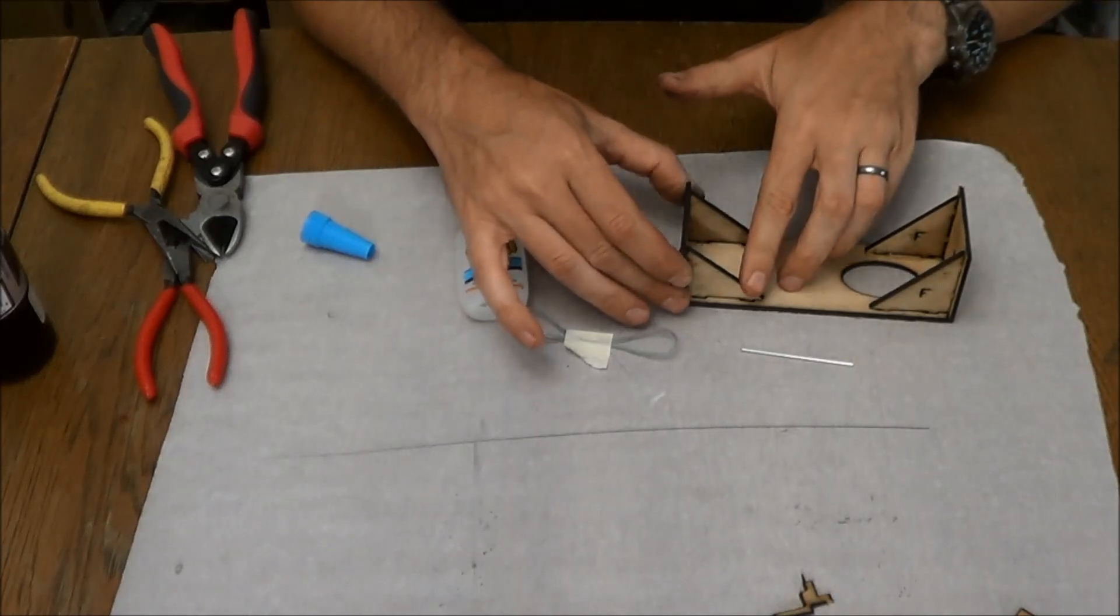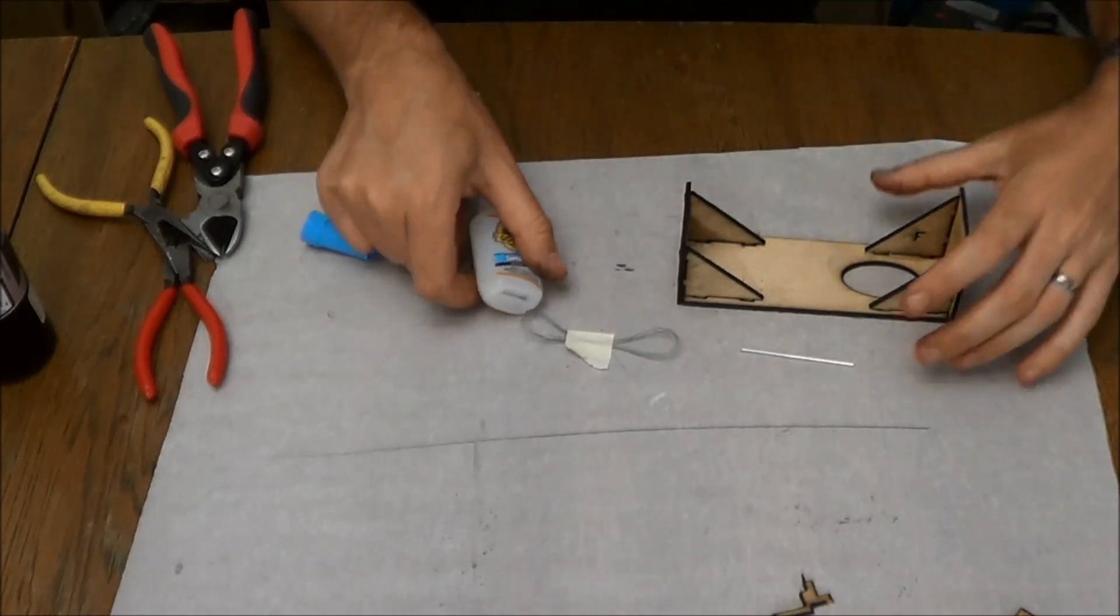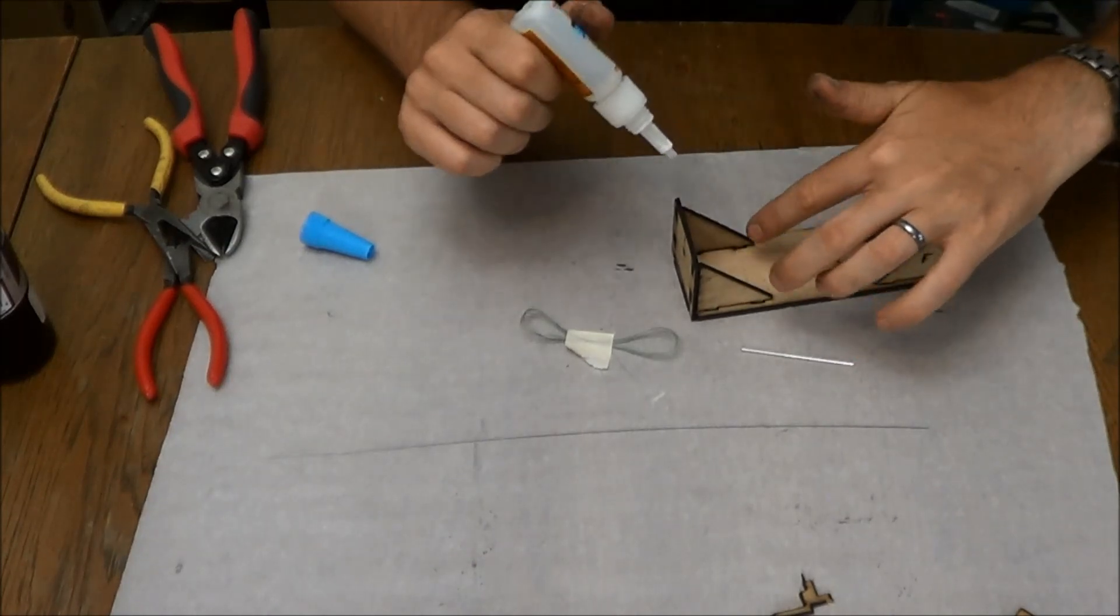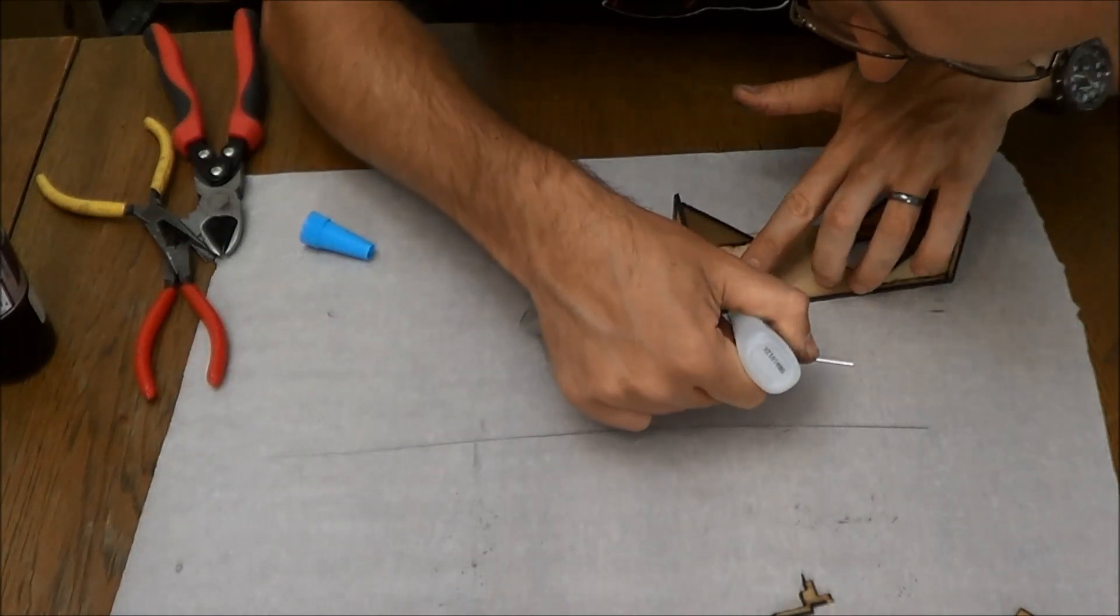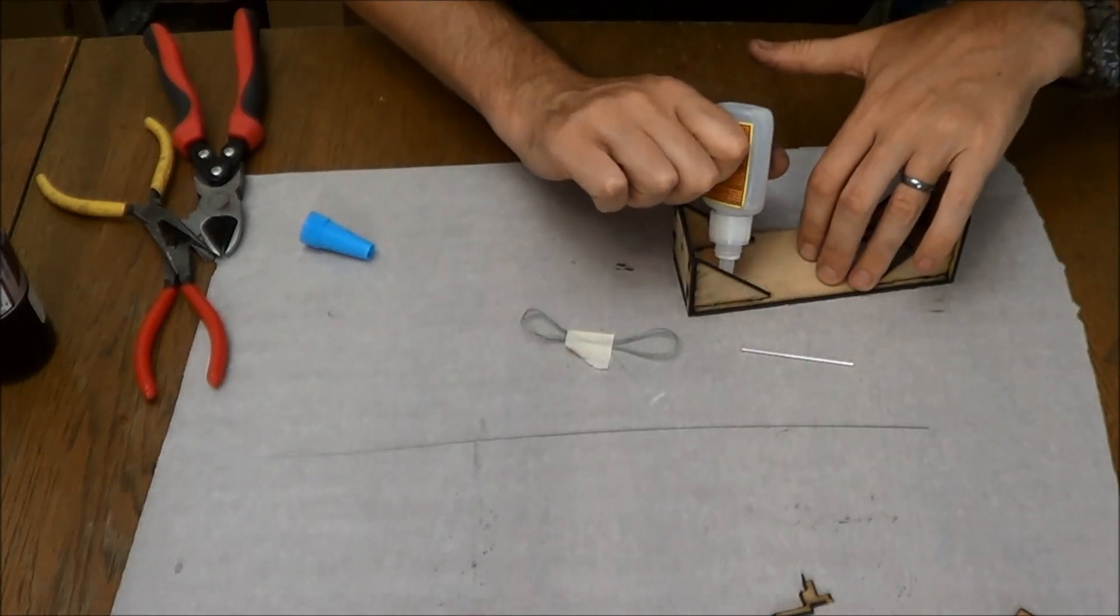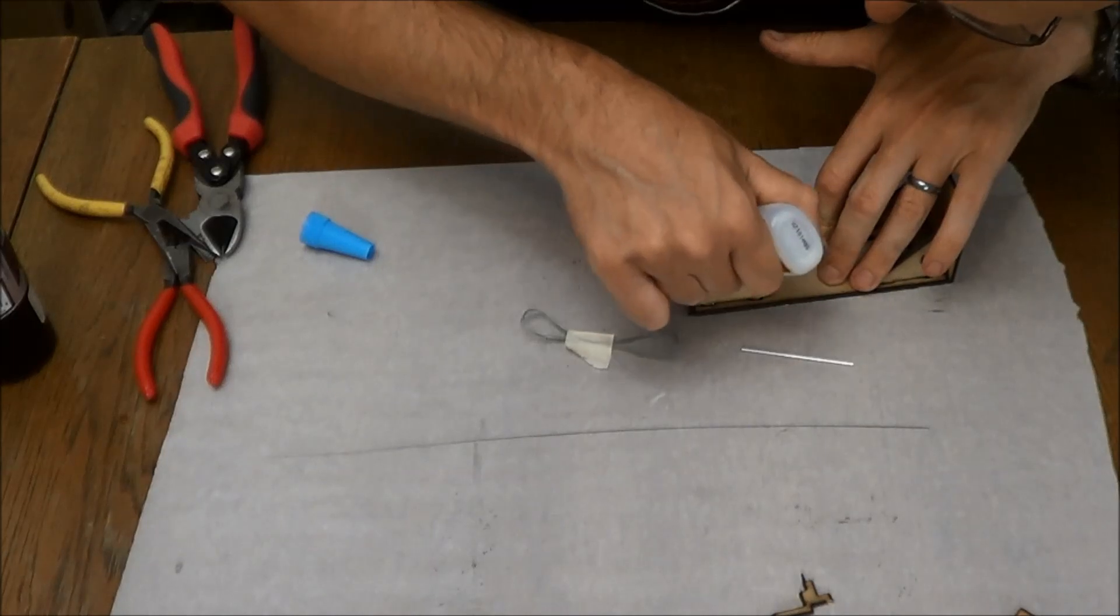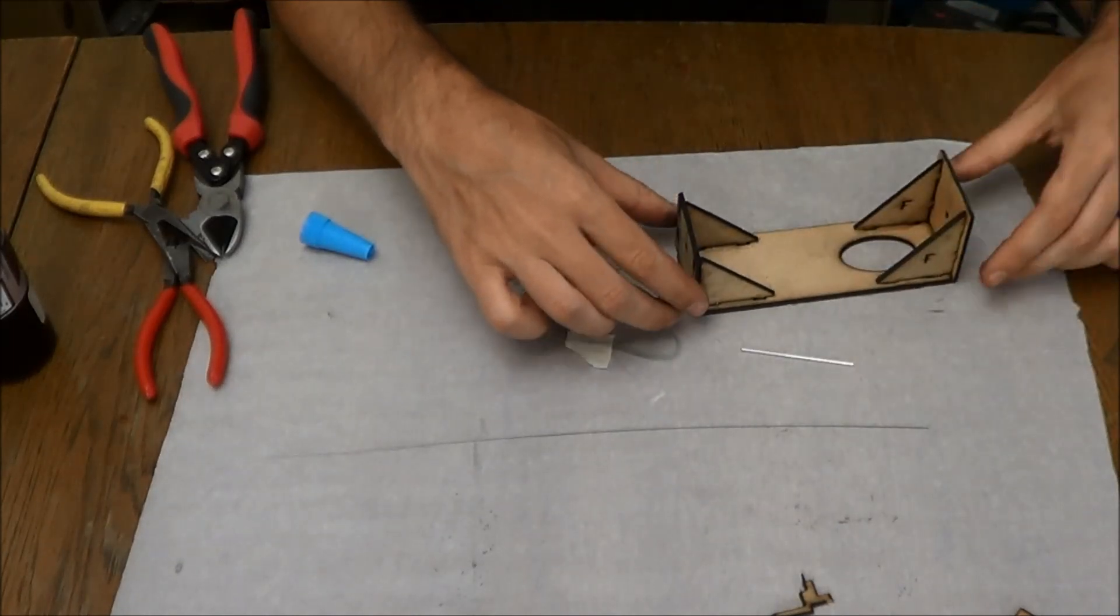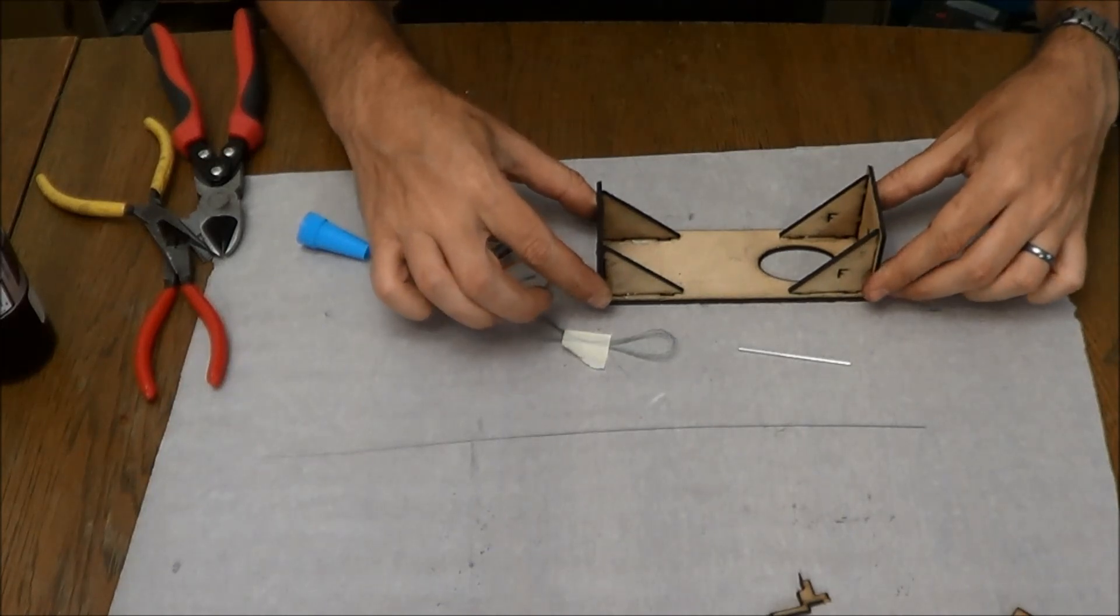This is a load bearing part because it's going to bear all of the tension from the rubber motor. So you do want to make sure these are decently secured in here. And there we go. That's the frame assembled.